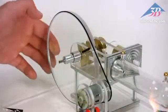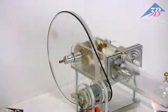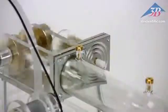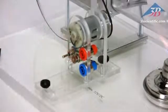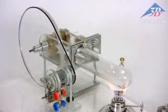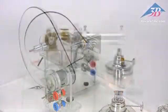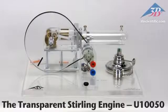Data logging possibilities include a photo gate for measuring RPM, a pressure outlet valve, 4mm plugs for electrical power, and temperature connectors to measure delta T. The transparent Stirling engine, item number U10050 from 3B Scientific.